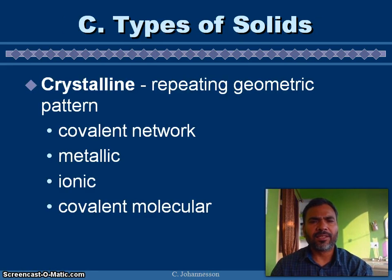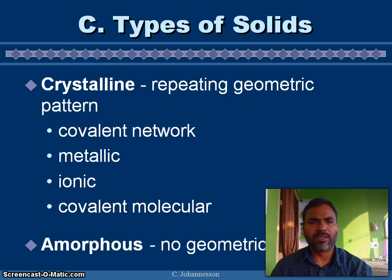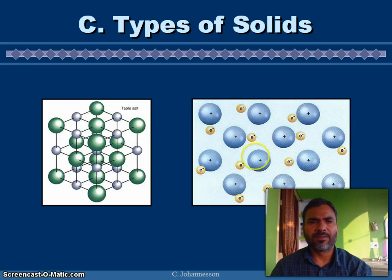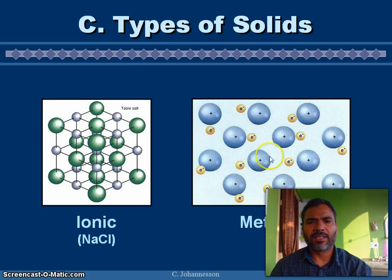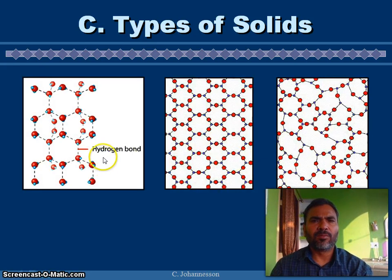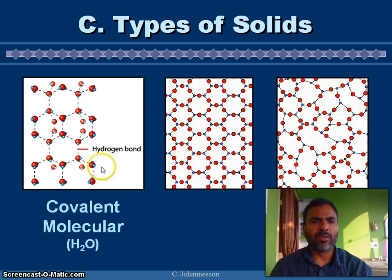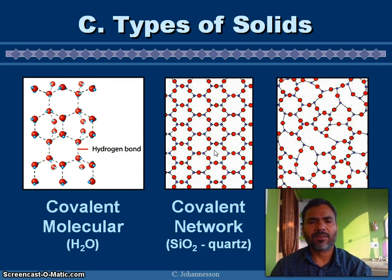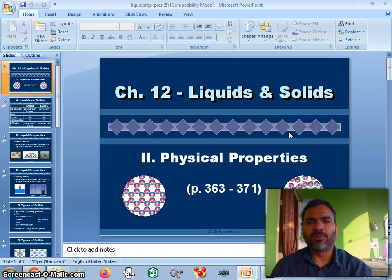Crystalline solids have a repeating geometric pattern. Types include covalent networks, metallic, ionic, and covalent molecules. Amorphous solids have no geometric pattern. So, in decreasing melting point: crystal table salt — ionic arrangement; metallic bonds; hydrogen bonds; covalent molecules; covalent network; and amorphous SiO2 glass.